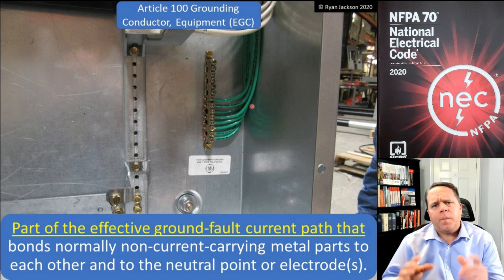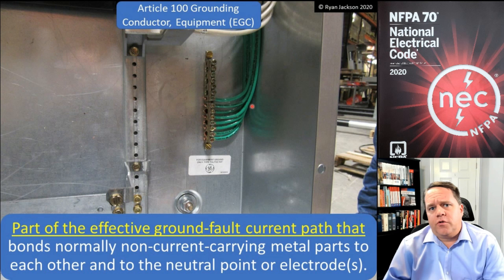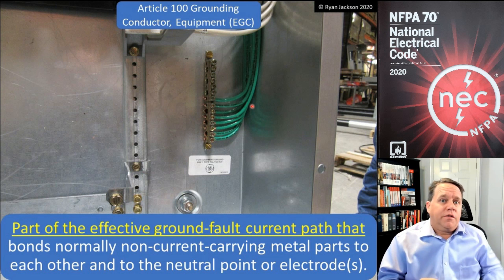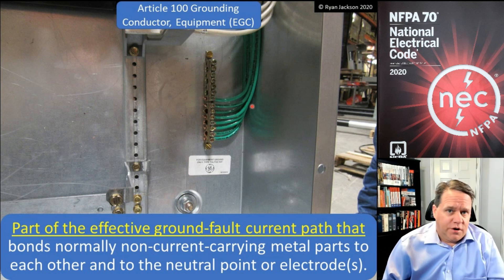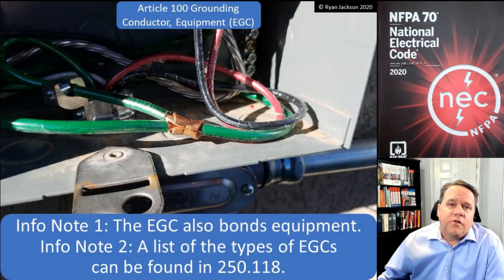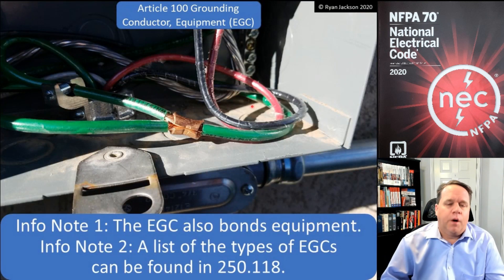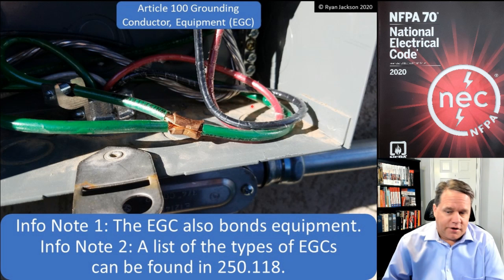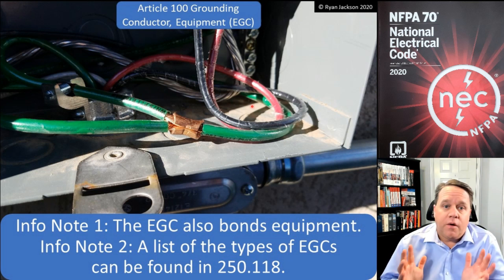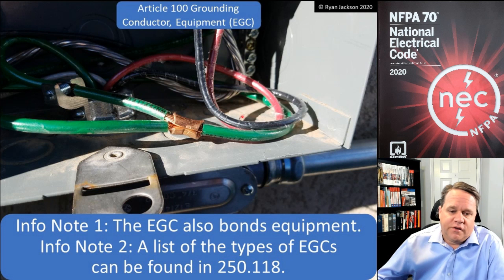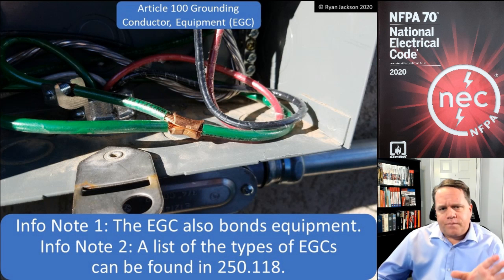So if you change equipment grounding conductor to equipment bonding conductor, you'd have the opposite people stomping their feet saying what about the grounding portion? What they did in the 2008 code is they said it does both — we're not going to call it grounding and bonding conductor. The first informational note says the equipment grounding conductor also bonds equipment; it's not just grounding, it's bonding.